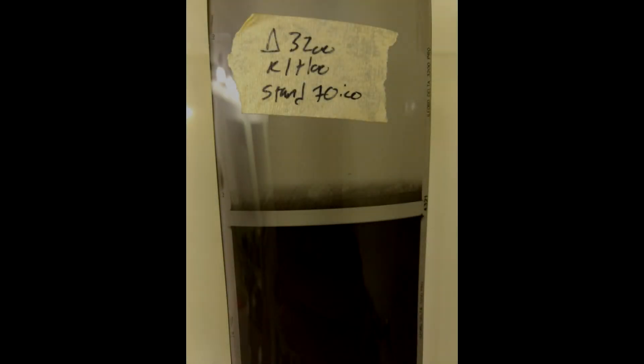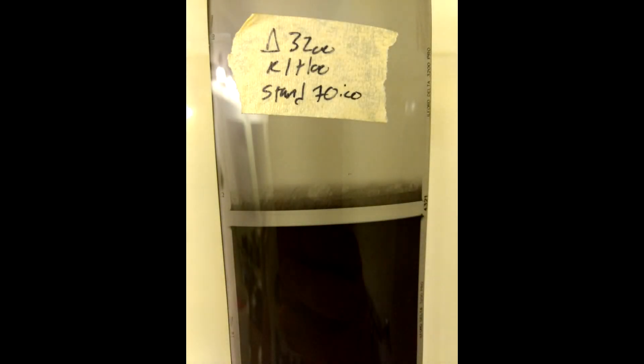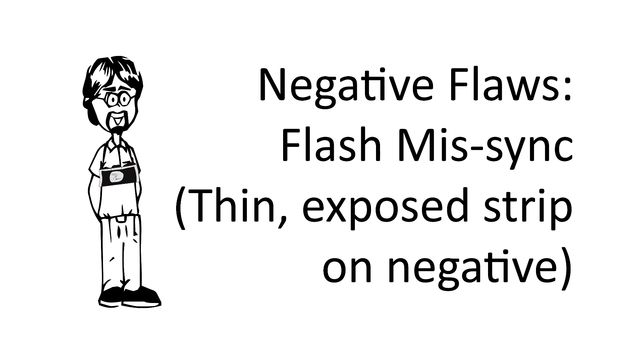This error falls solidly into the user error category. This negative shows a photo that was taken in the dark with the shutter set faster than the camera's fastest sync speed. So let's take a look at how a camera shutter works to understand why cameras have a fastest sync speed.